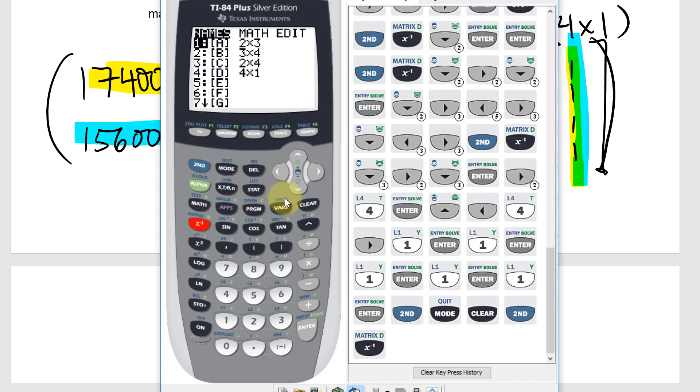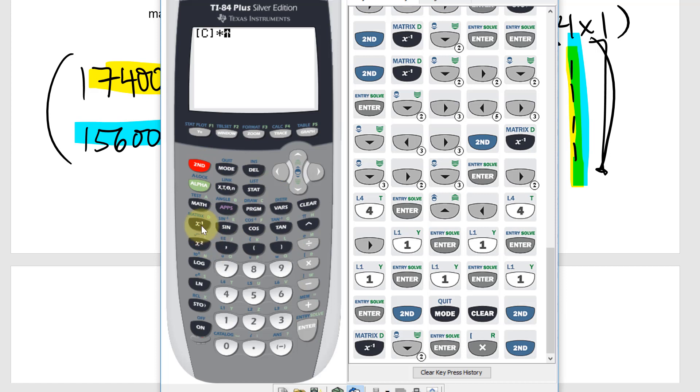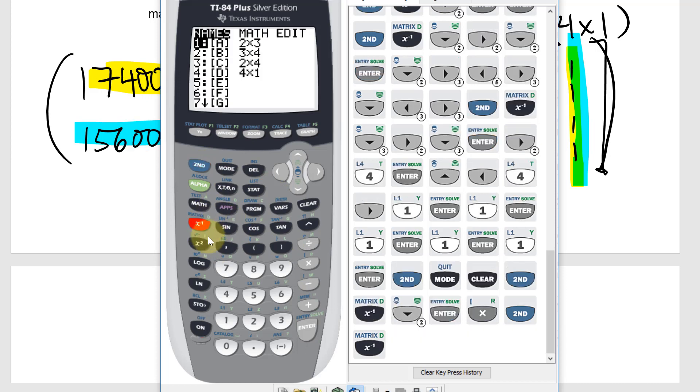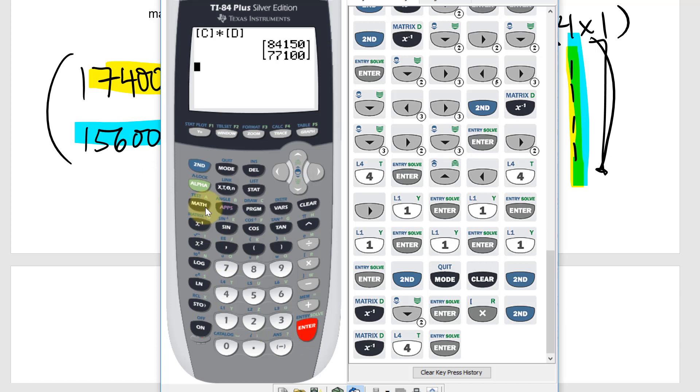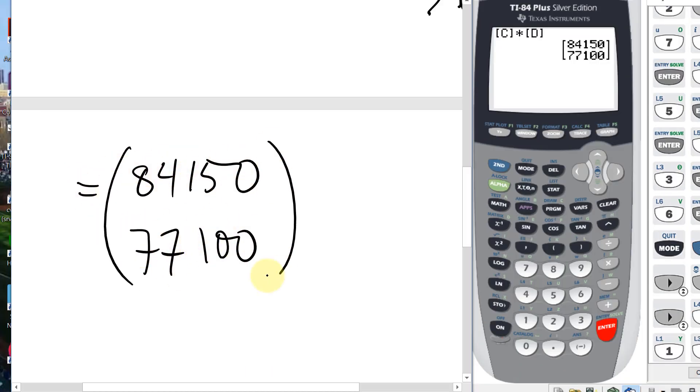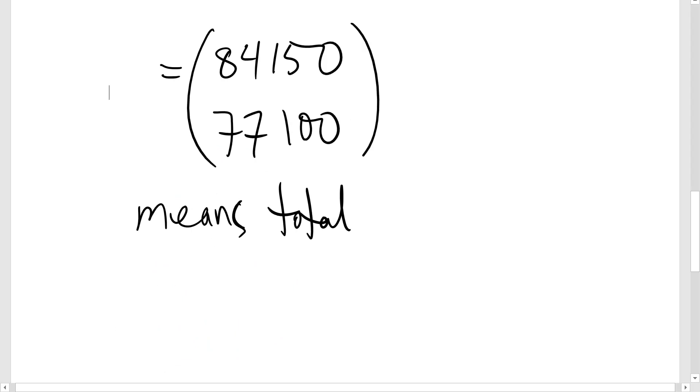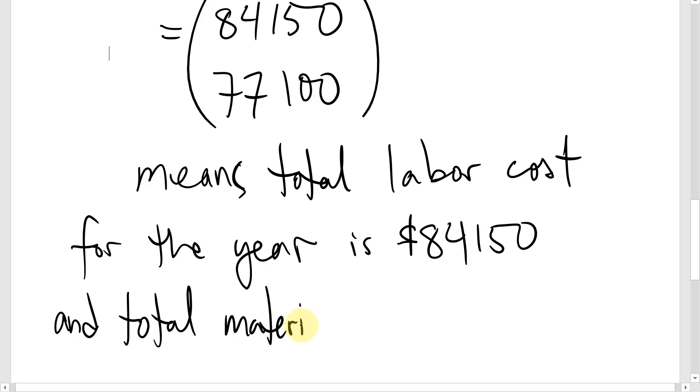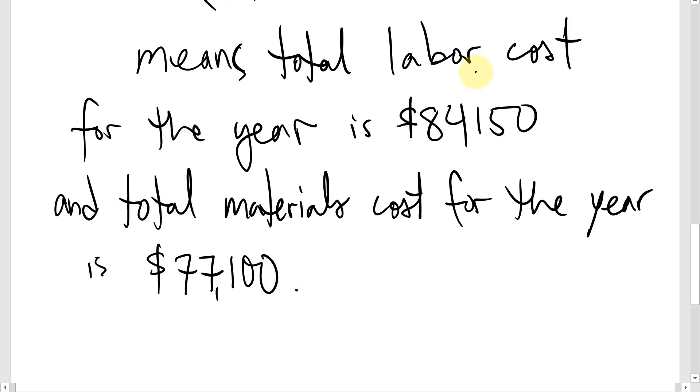So now we can just take matrix C, the result of A times B, multiply it times D. And those are labor and material costs for the year. Means the total labor cost for the year is $84,150 and the total materials cost for the year is $77,100. Okay, that's the end. Hope it's been helpful.